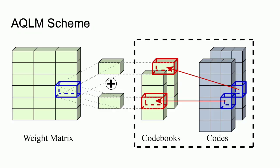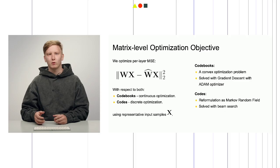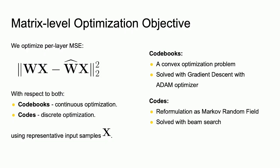On the figure on the slide, we can see the encoding scheme that goes from right to left as follows. For a specific block highlighted in blue, we take the corresponding integer codes. We use each code to select a specific vector from the corresponding codebook. Finally, we sum up the selected vectors to obtain an approximation of the block's original matrix. Having defined the representation, we formulate the optimization objective as per-linear-layer output mean square error minimization. We use samples from the RedPajama dataset to produce representative layer inputs and outputs. We optimize MSE with respect to both codebooks — a continuous optimization problem solved with ADAM — and codes, a discrete optimization problem solved with beam search.